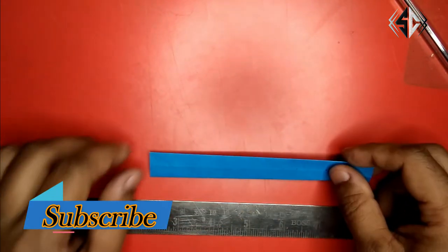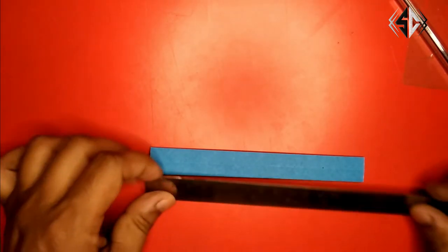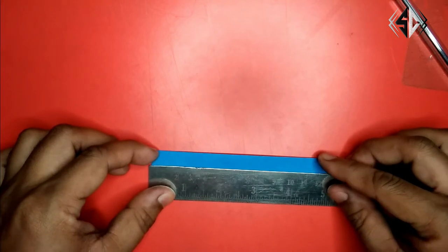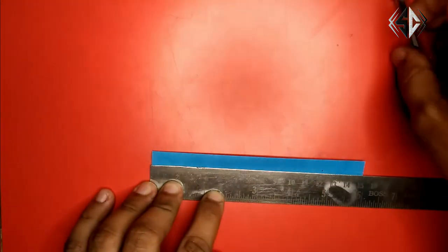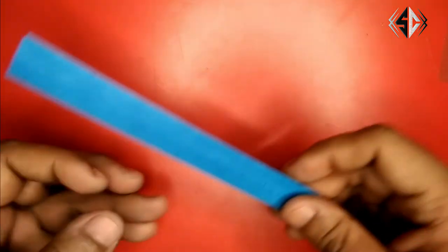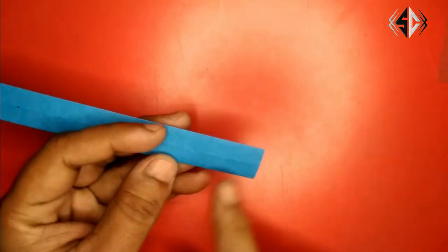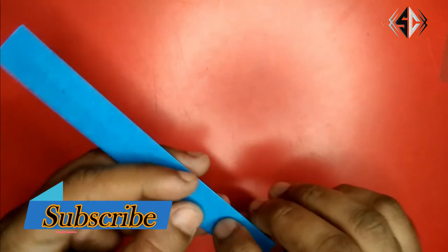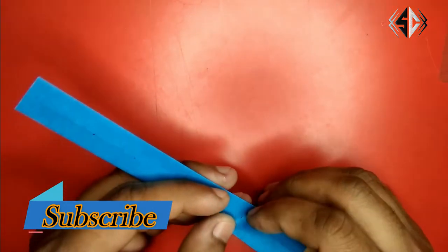We will make a mark at 3.5 cm. We will fold both sides from the side. We will make a mark at 90 cm.